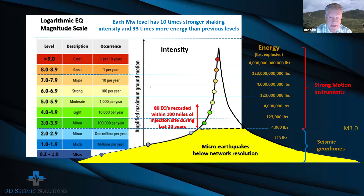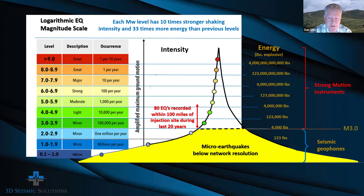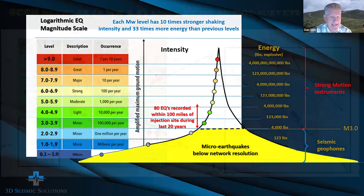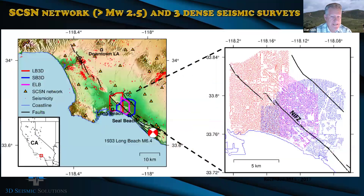Just because micro-earthquakes are not detected and are not cataloged in the official USGS files doesn't mean they don't exist. In fact, micro-earthquakes provide the most comprehensive evidence of current fault activity, and they can provide precise coordinate data of active fault locations. But how can these micro-earthquakes be detected? The answer is by using dense networks with 3D seismic geophones.